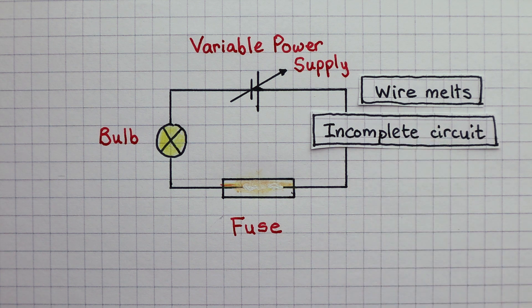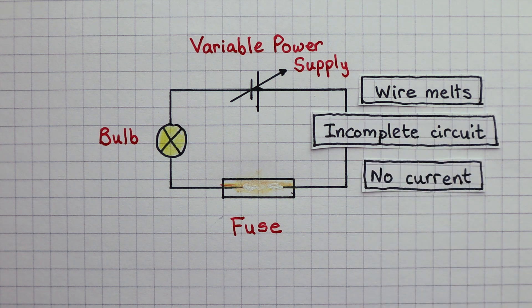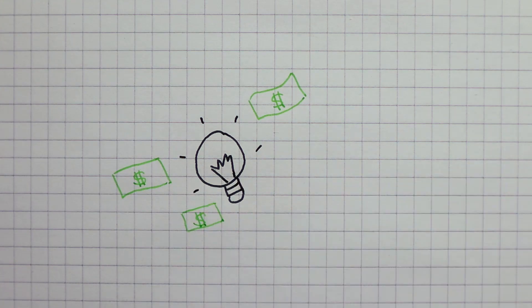Then we no longer have a complete circuit. Not having a complete circuit means that current cannot flow. So in sacrificing the fuse, we protect our more expensive light bulb.